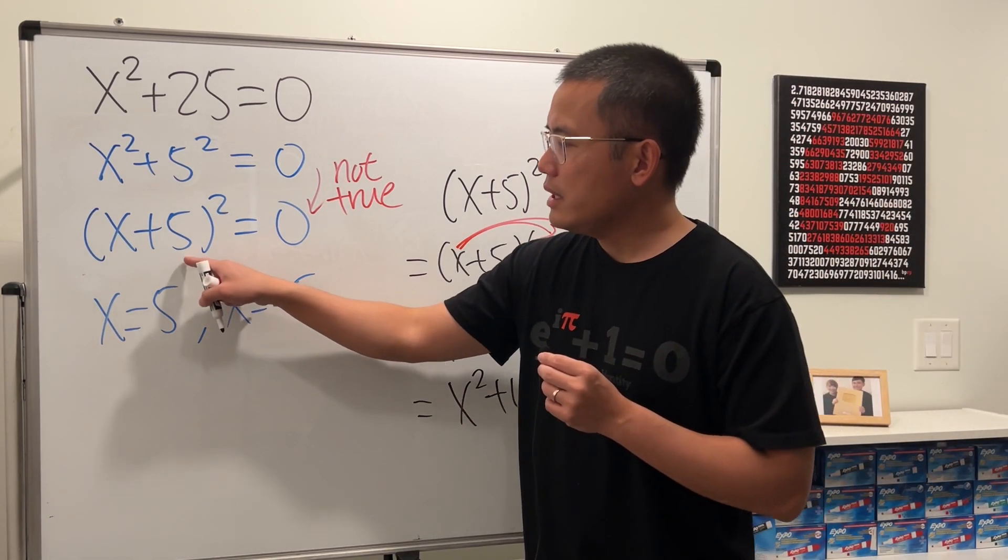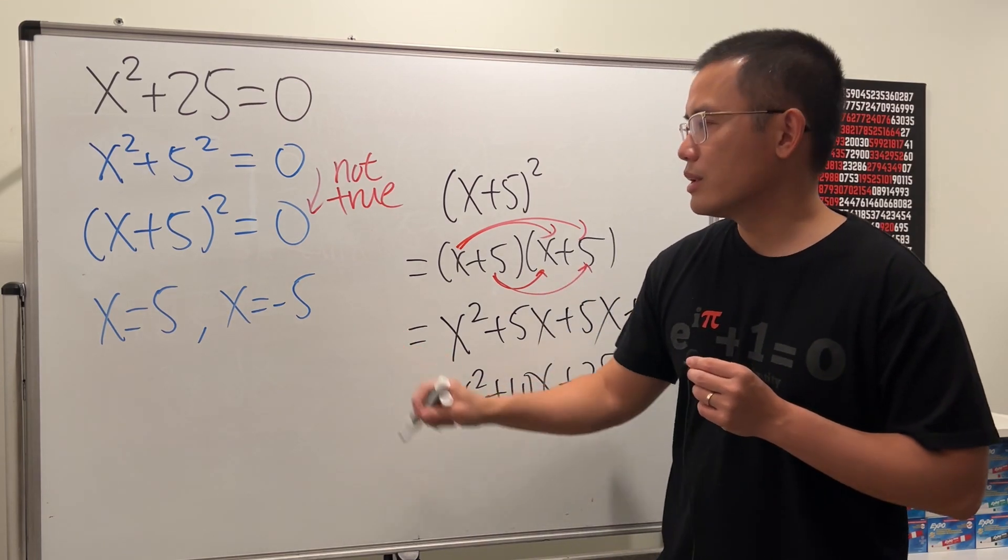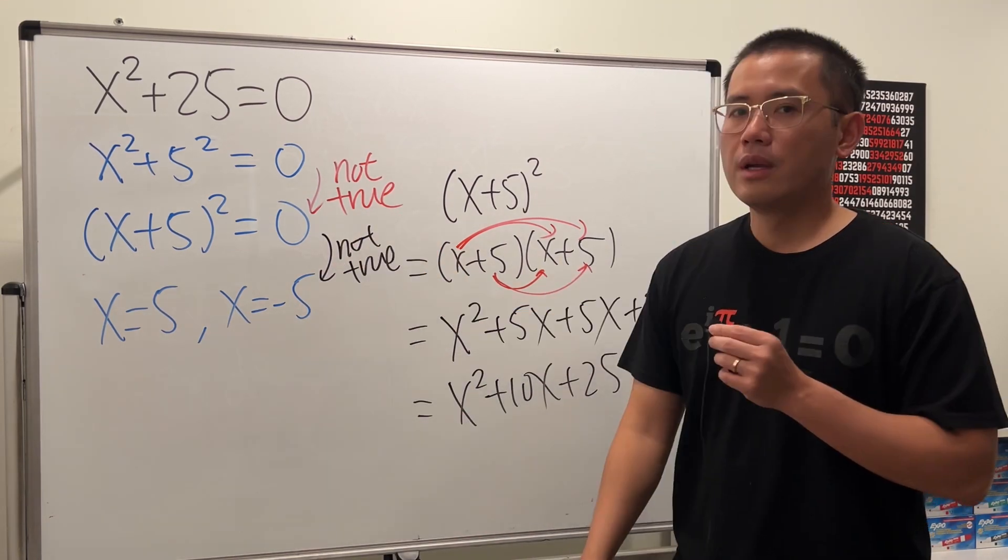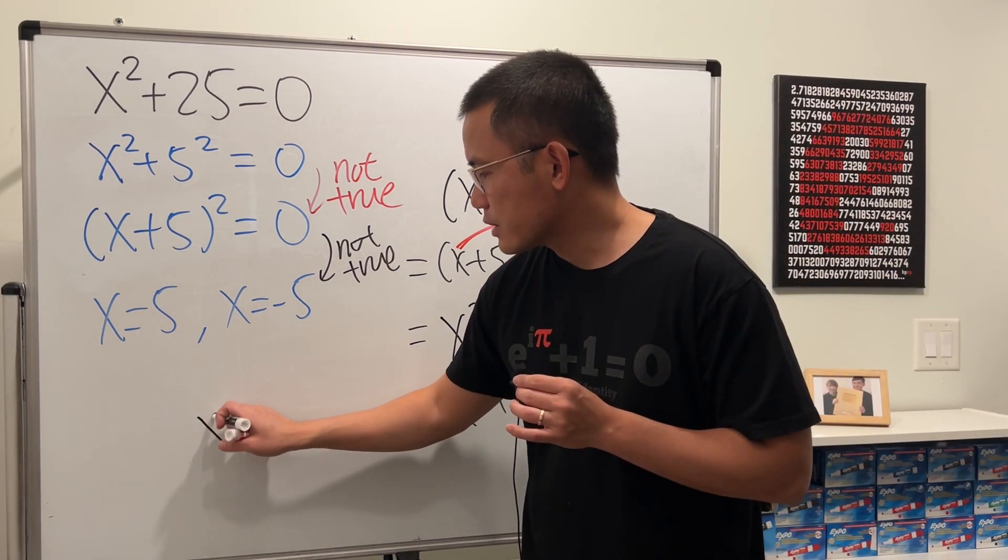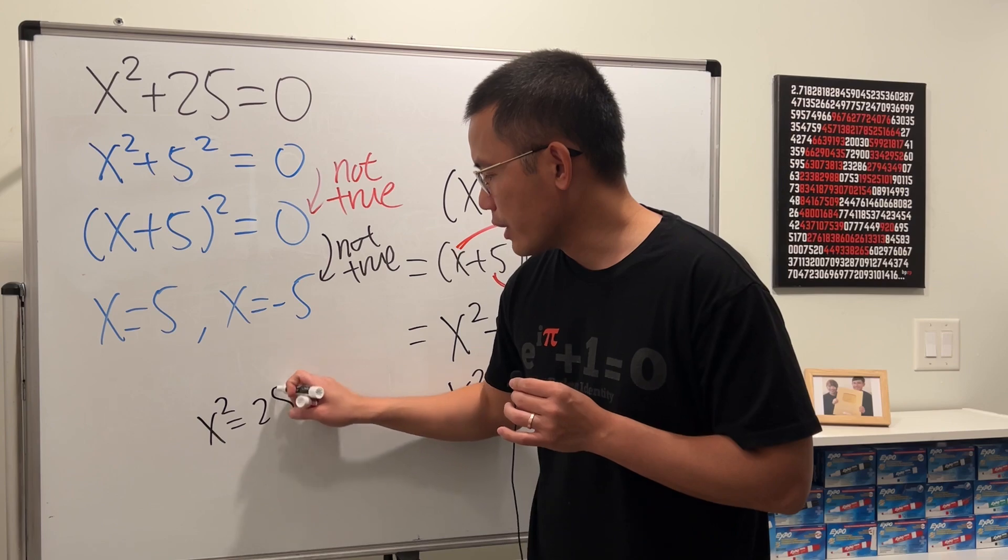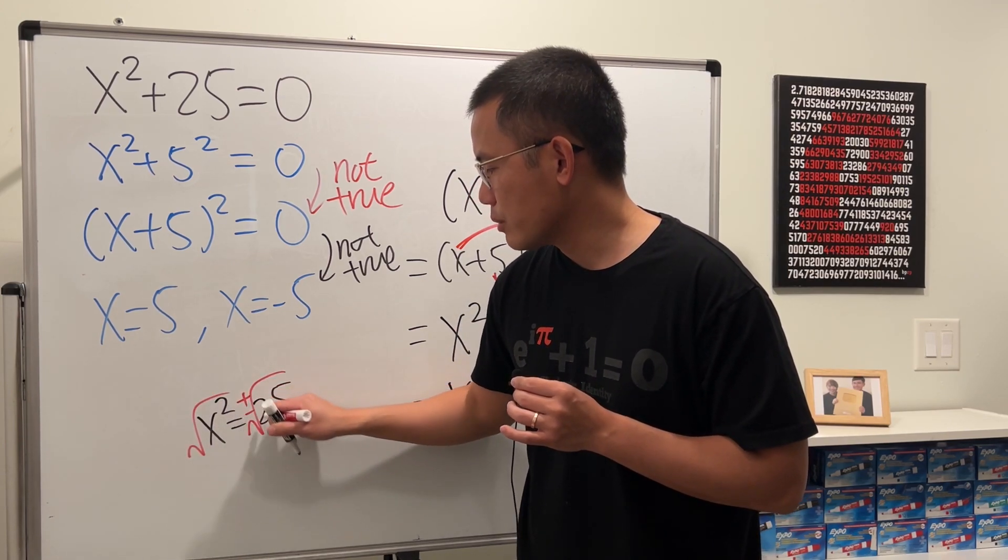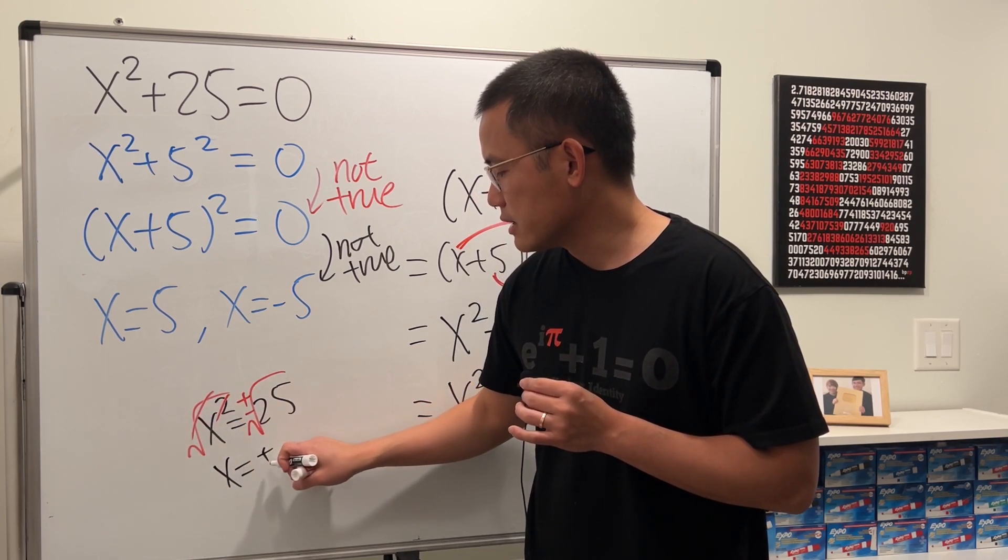Moreover, from here to here, suppose you didn't have that, from here to here, you also don't get two solutions either. This is also not true. I think what the person was thinking is that if you have x² = 25 already, then yes, you can just take the square roots on both sides and put a ± and say that x = ±5.